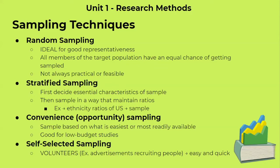The third type of sampling is convenience or opportunity sampling. This is basically when researchers sample based on what is easiest or most readily available to them. This is very good for low-cost studies because you do not have to go through expensive methods like random sampling, which require a lot of information. You could just use whoever is most readily available — people like your friends, people through social media, things like that.